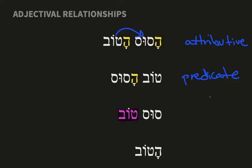And then finally, we have substantive adjectives, which is basically an adjective that becomes substantiated. When there are no nouns next to the adjective for it to agree with, it's probably being used substantively. So when Jesus said 'Blessed are the blank' — 'Blessed are the poor,' 'Blessed are the meek' — those are all substantive adjectives. In this example, ha-tov with nothing next to it just means 'the good one.' But if it were plural, ha-tovim, that would be 'the good ones.'